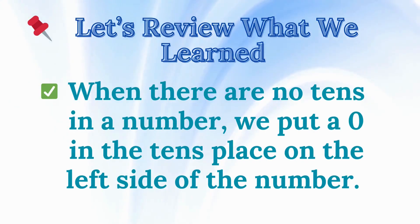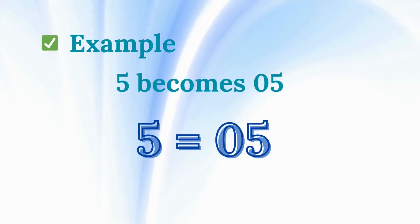Let's review what we learned. When there are no 10s in a number, we put a 0 in the 10s place on the left side of the number. For example, 5 becomes 05.